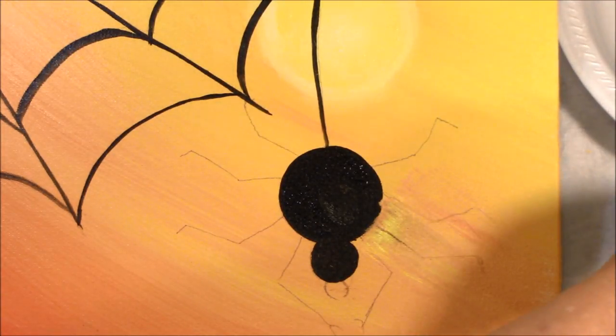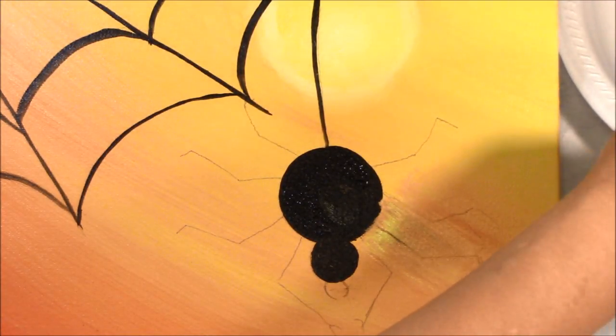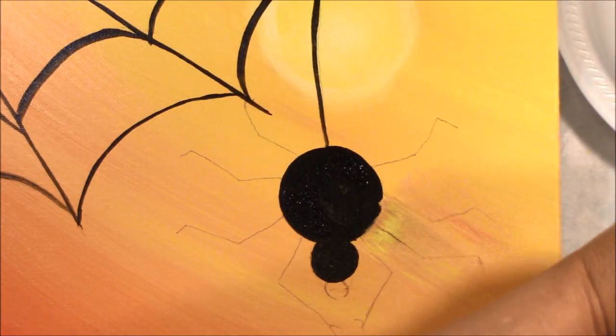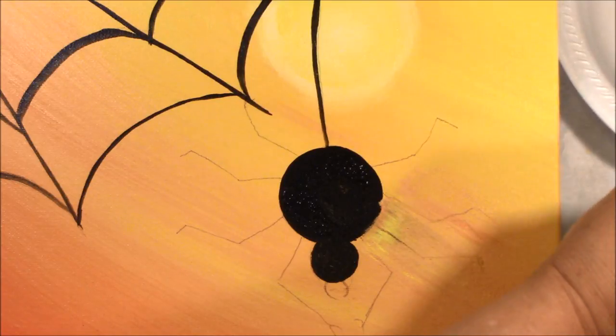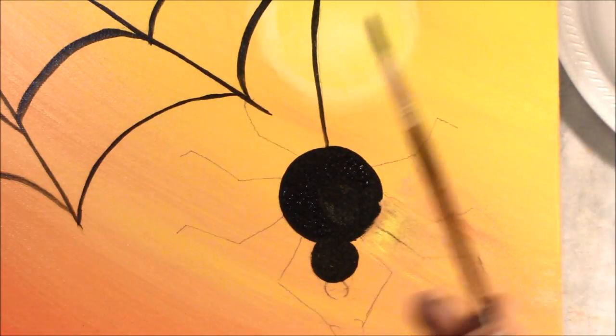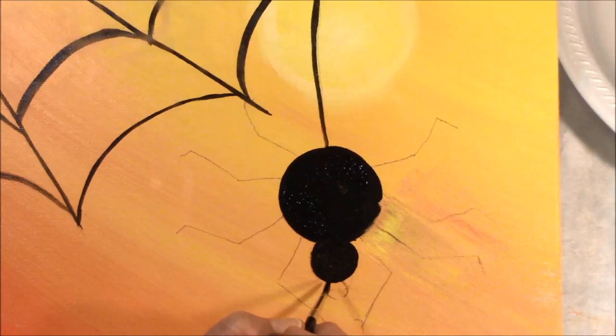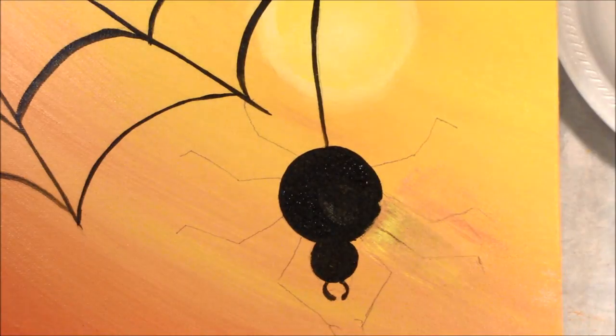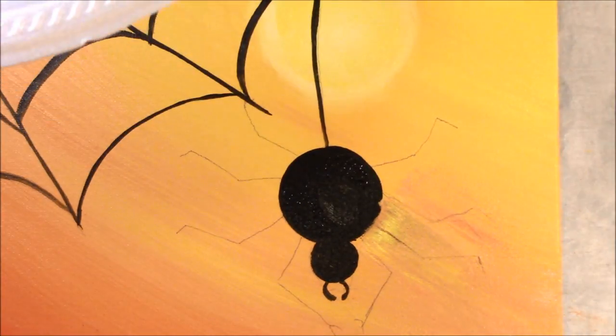So I'm going to use my little liner brush. Put some black back on it. A little bit of water. Not too much because you don't want it to run. Twist it through. Get a nice little point. And I'm just going to make these little C going that way. And a little backwards C. Those are his little pinchers. Okay.